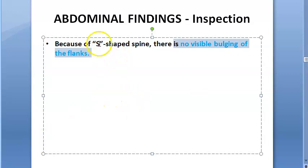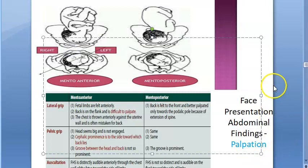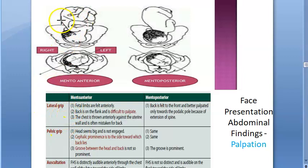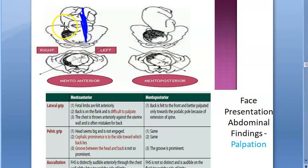In inspection, there is no bulging of the flanks because of the S-shaped spine. In palpation, you will see the same thing as occipito-posterior position. If you do the lateral grip, you will feel the limbs - the back is on the flanks so you will not get the back to palpate. The chest is drawn anteriorly against the uterine wall, so you will always mistake the chest for the back.